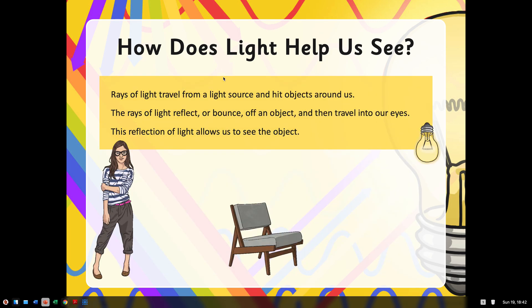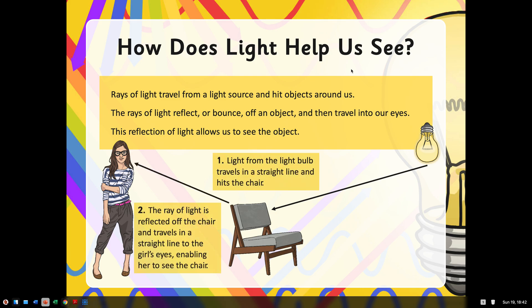Rays of light travel from the light source and hit objects around us. The rays of light reflect or bounce off the object, and then they travel into our eyes. It goes from there to the object, from the object to the person. A lot of people think that light travels from the light source to us and then from us to the object. That's quite a common mistake, but in fact it goes to the object and it reflects or bounces off of the object and then goes into our eyes.